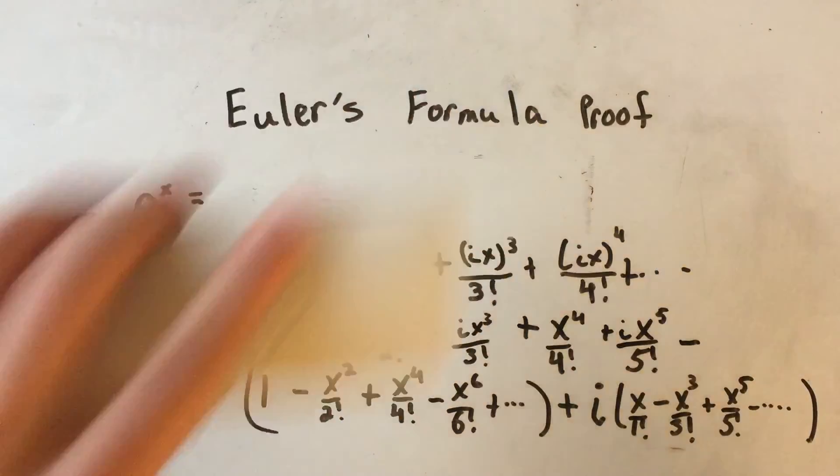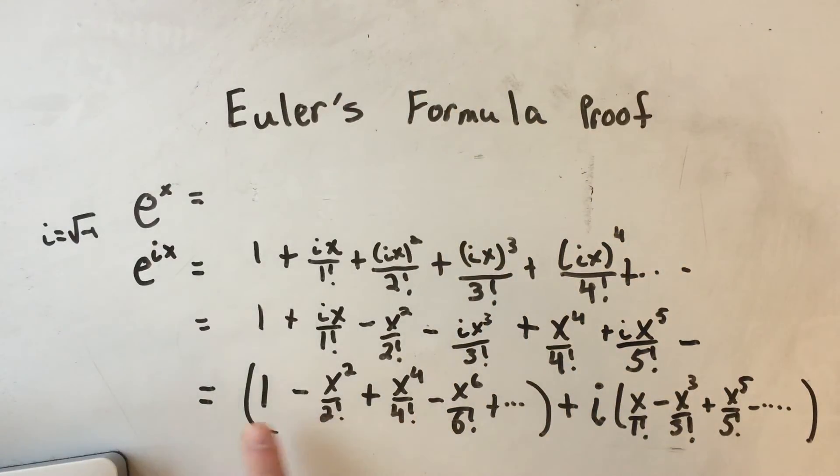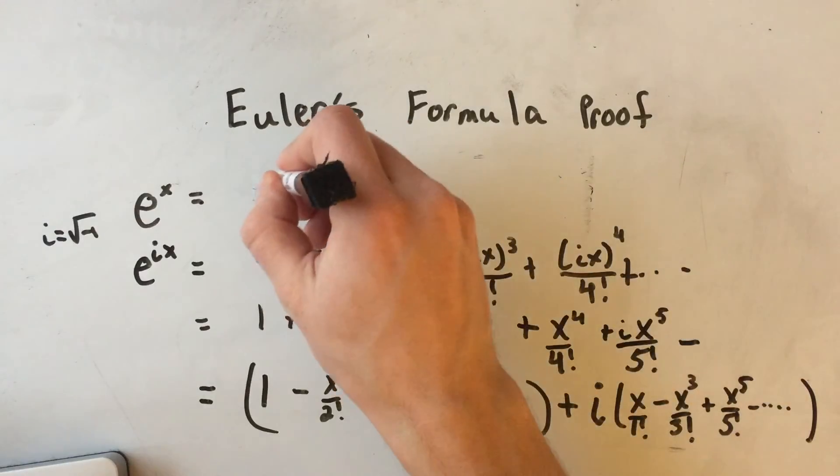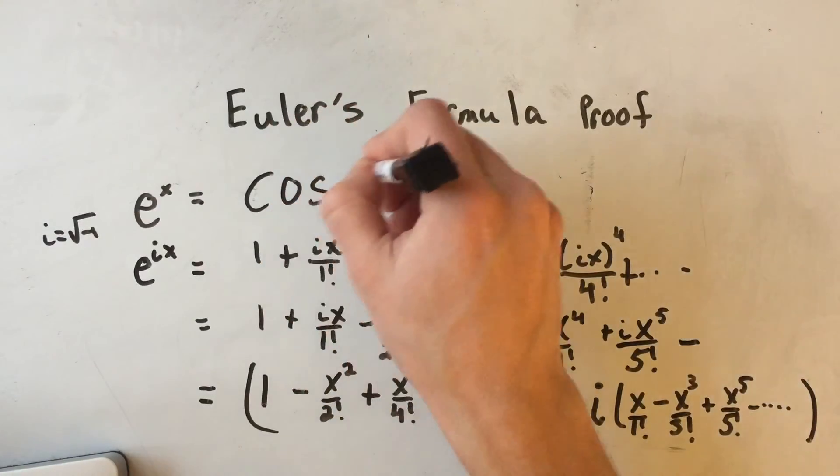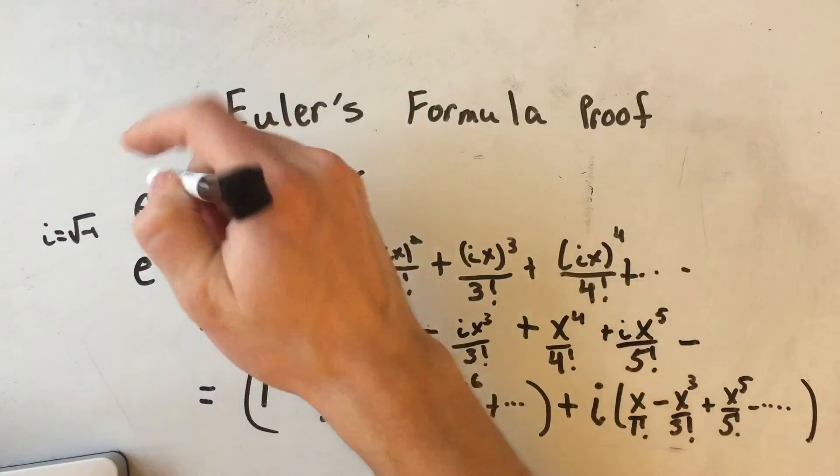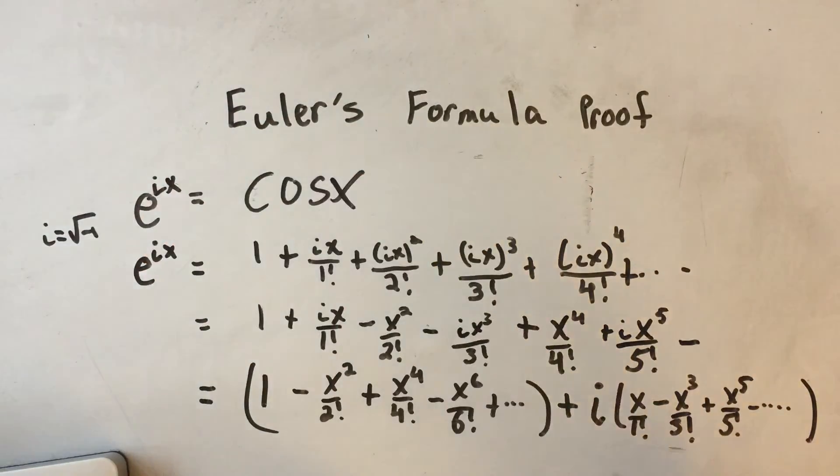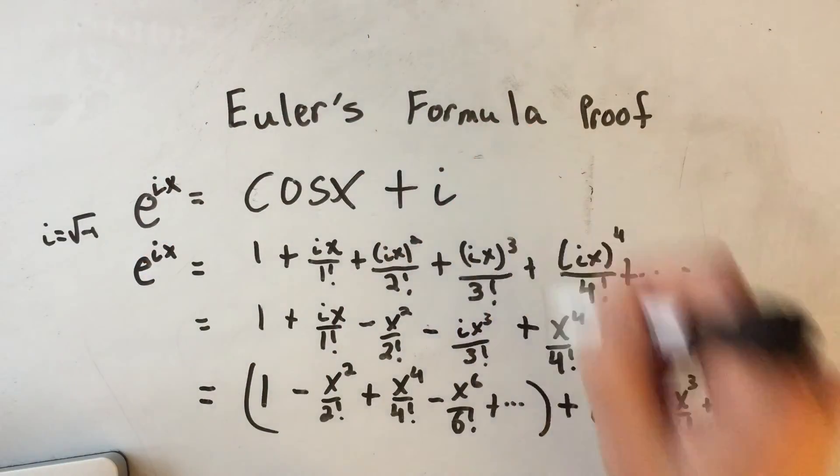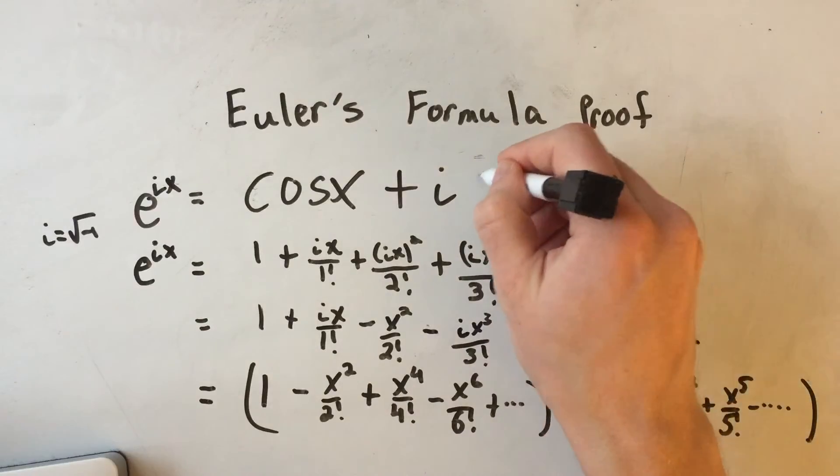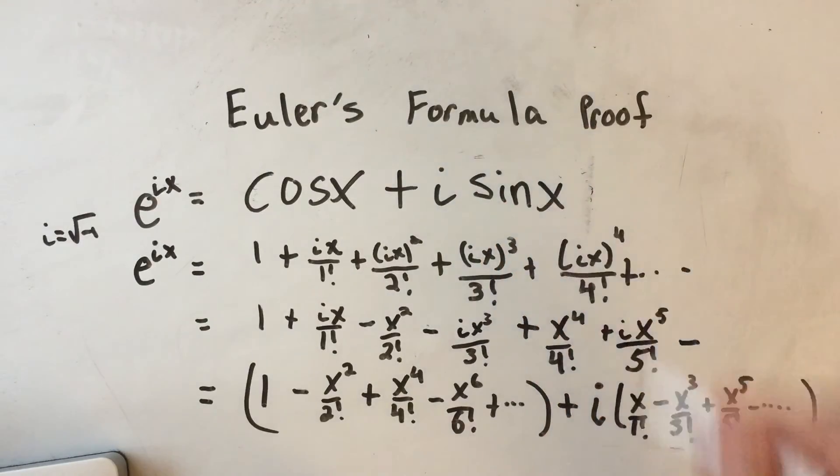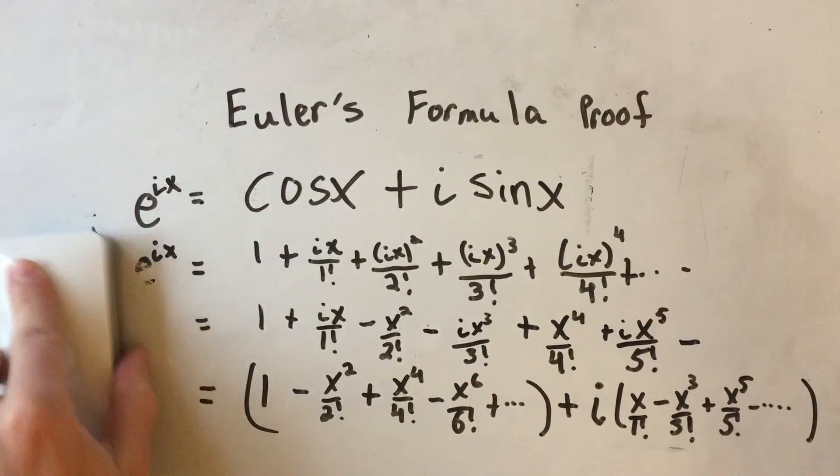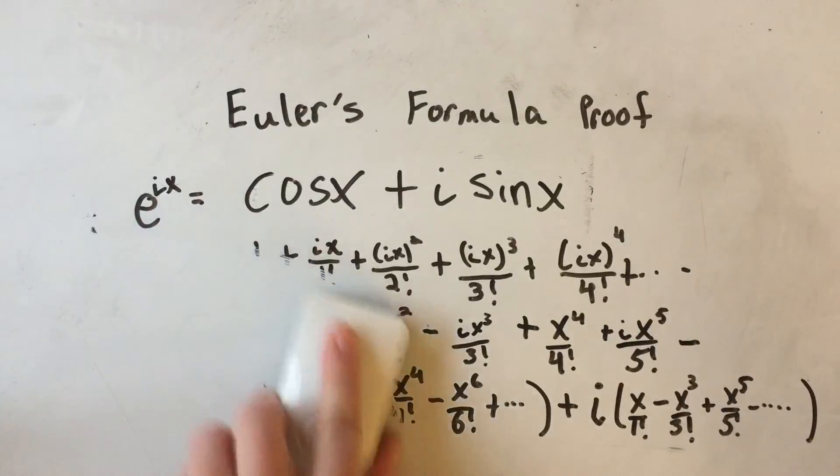So I'm just going to replace this first grouping by cosine x. And then I've got plus i, I'll replace this grouping with sine x. And there you have it. There is Euler's formula.